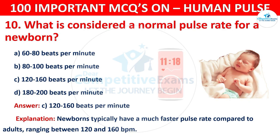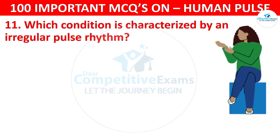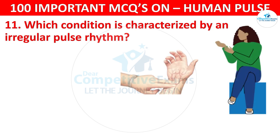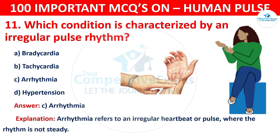Question number 11: Which condition is characterized by an irregular pulse rhythm? Your options are: Bradycardia, Tachycardia, Arrhythmia, or Hypertension. The correct answer is C, that is arrhythmia. Arrhythmia refers to an irregular heartbeat or pulse where the rhythm is not steady.